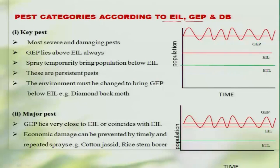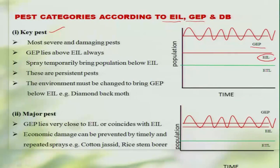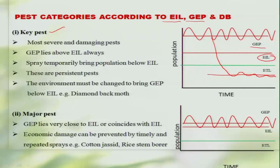The third classification is based on the economic injury level (EIL) and general equilibrium position (GEP). A key pest is one where the GEP of the pest population is much higher than the economic injury level. We need to frequently intervene with management practices to bring the population below the economic threshold level and maintain it at a modified GEP. Such pests are quite severe and cause huge economic losses. A best example is the diamondback moth on cabbage and cauliflower.